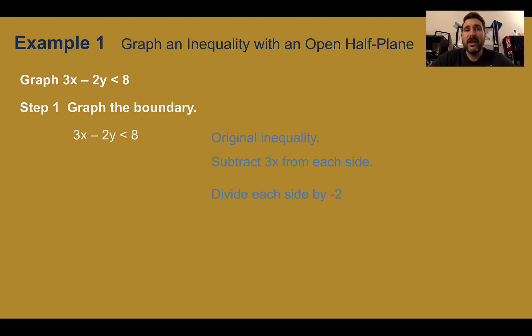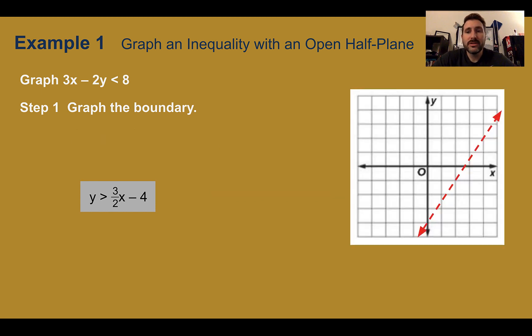Example 1, graph an inequality with an open half-plane. So graph 3x minus 2y is less than 8. Step one, graph the boundary. So I'm going to change this into slope-intercept form, subtracting 3x from both sides, then dividing both sides by negative 2. I end up with y is greater than 3/2 x minus 4. Remember, we flip the inequality sign when we divide by a negative, so it is switched. This is the line that we're going to graph as our boundary.